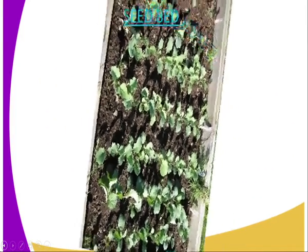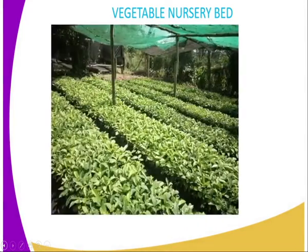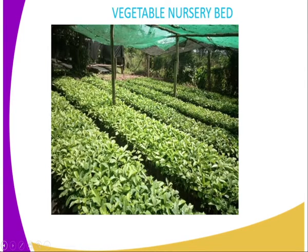Now we go to the types of nursery bed. The first one is the vegetable nursery bed — you can see it there. It is used for raising seedlings for vegetables, for example tomatoes, cabbage, kale, and so on.